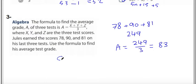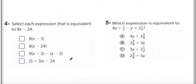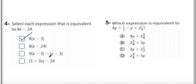Next question: select each expression equivalent to 8x minus 24. We know 8 times 3 equals 24, so 8 times x minus 8 times 3 works. One option cannot be correct because it shows 8 times 24. Now let me explain the next option: we multiply 9 by the bracket to get 9x minus 27.